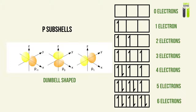The P subshell can exist in 3 different orientations: P-1, P0, and P1. A P subshell can contain a maximum of 6 electrons. Since each square box can contain only 2 electrons max, we use 3 square boxes to represent our P subshell. The electrons fill up left to right, occupying all the empty square boxes before filling a box that has already been occupied.